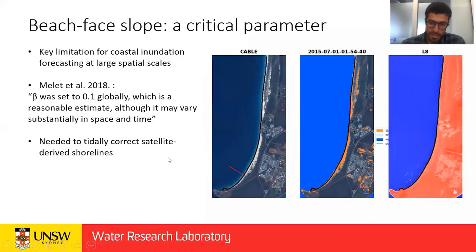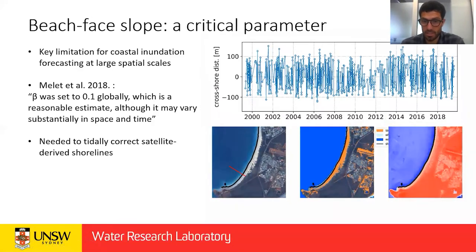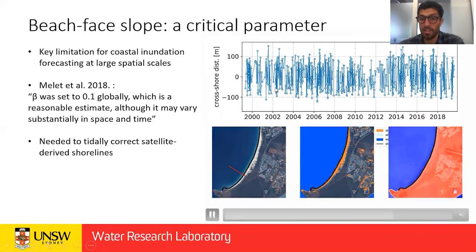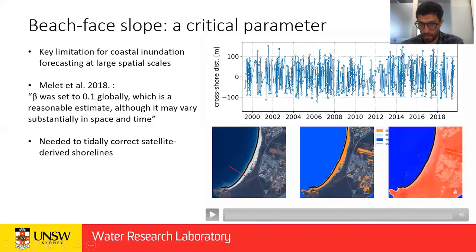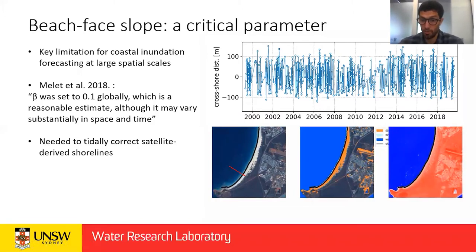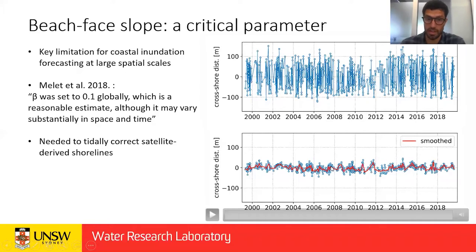If we put a transect somewhere and extract the cross-shore shoreline change, we get very noisy data where the signal is mainly the tide going up and down. This is not very useful for us as coastal engineers, but if we know the beach slope along that transect, we can remove the tidal signal and then get something more insightful — for example, seasonal changes in the shoreline.